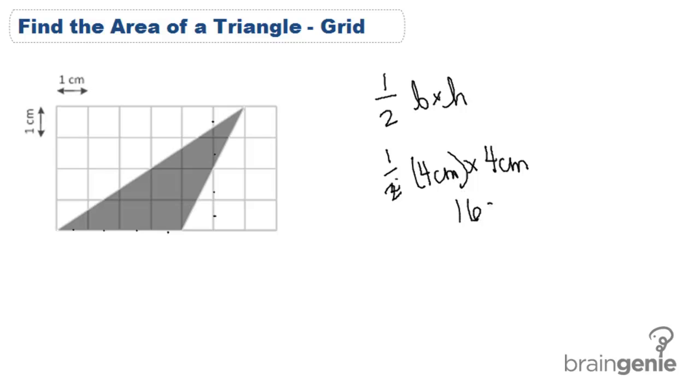Four times four is sixteen. And multiplying by one half is just the same as dividing by two, which I know sixteen divided by two is eight centimeters. And don't forget they're always squared.